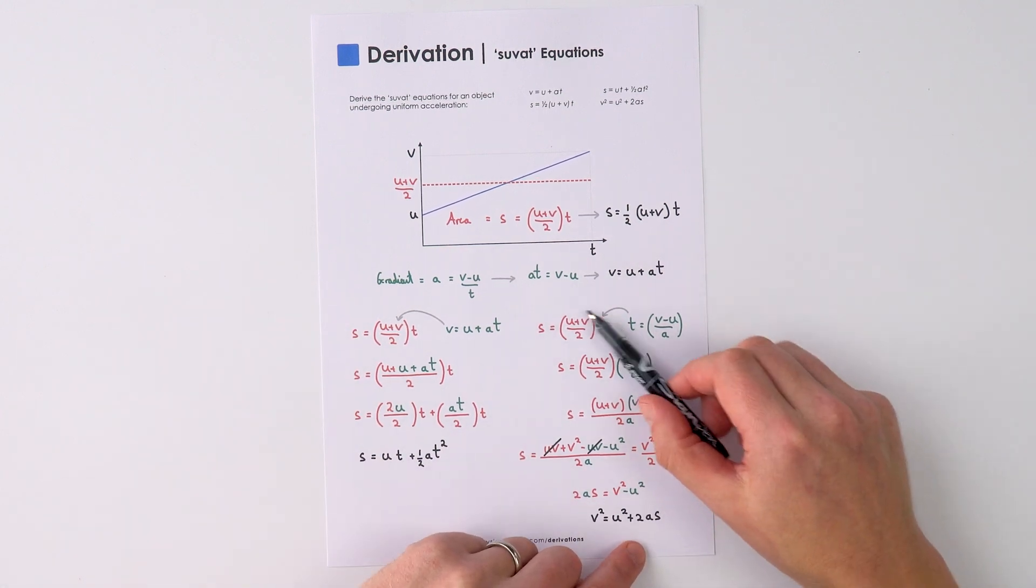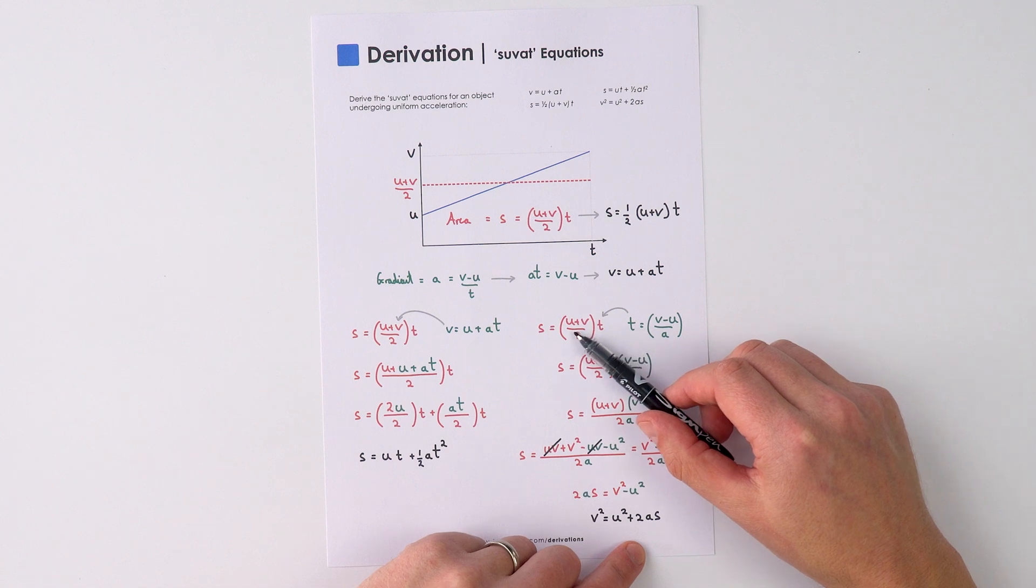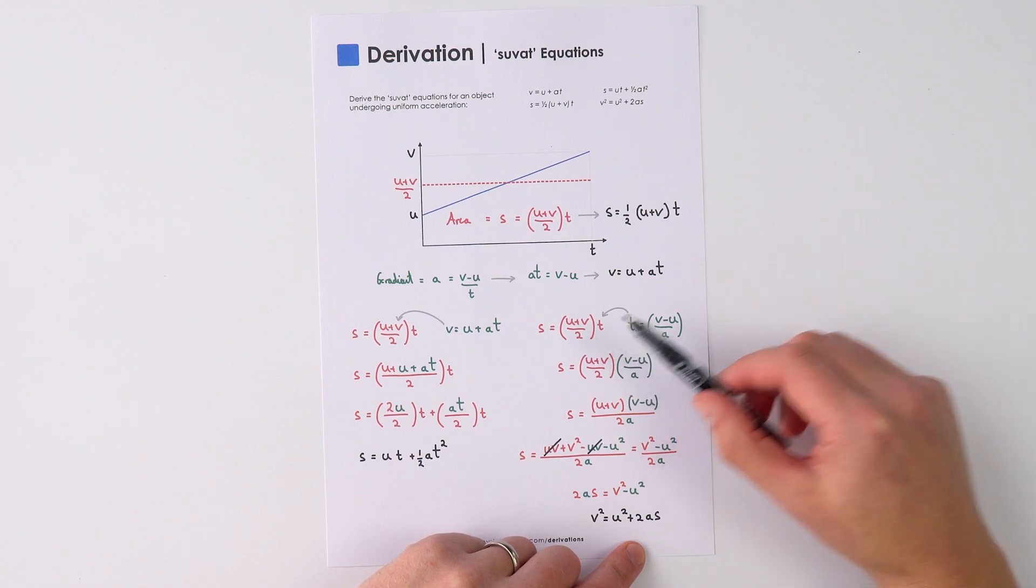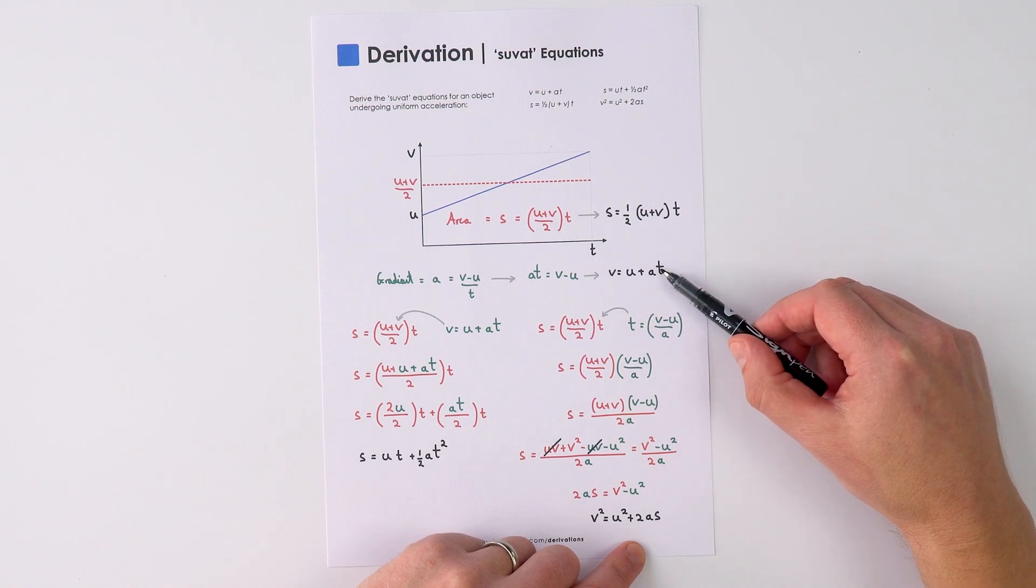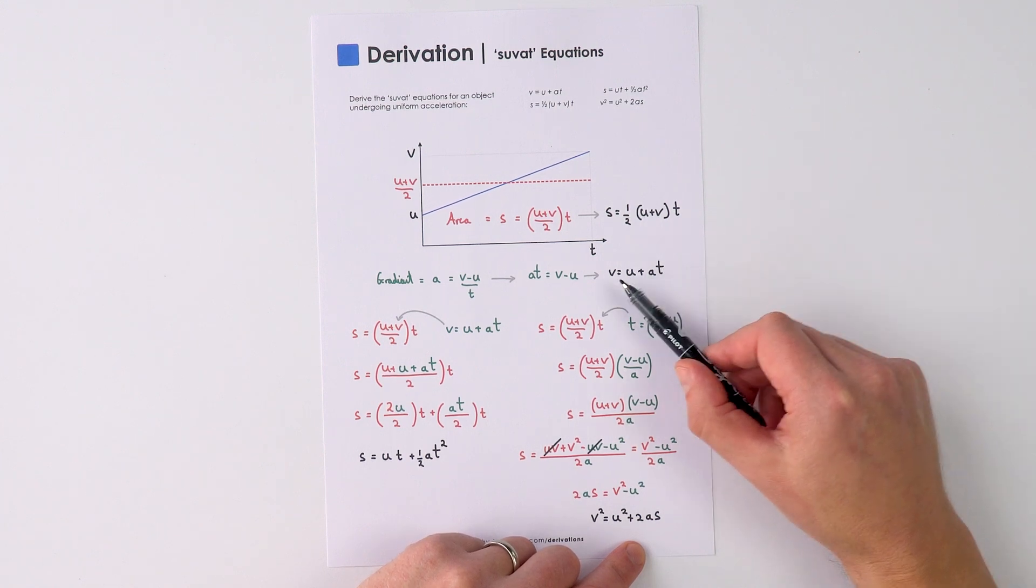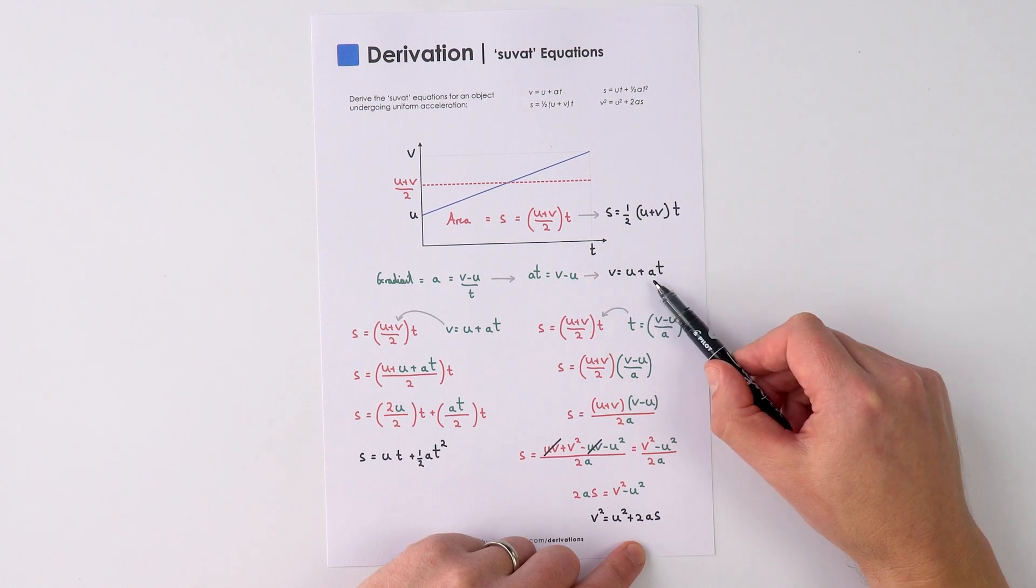The other thing that we can do is again we can start out with this equation s equals u plus v over two times t, but now we can replace the t by rearranging this equation over here. So t is going to be equal to v minus u divided by a.